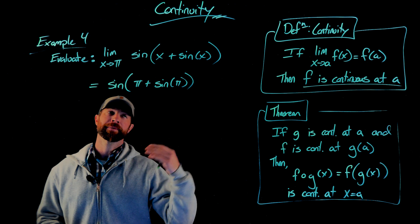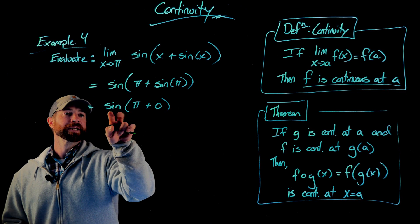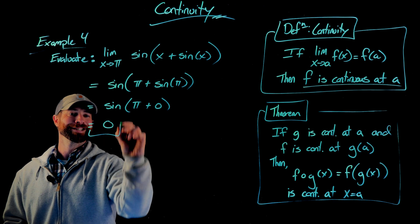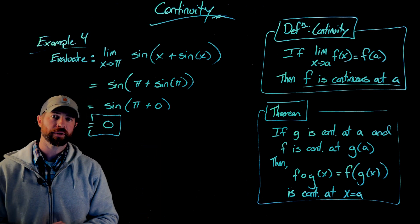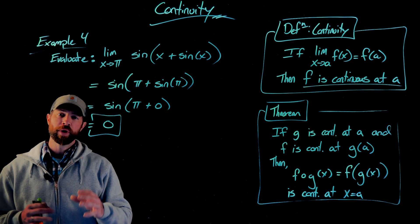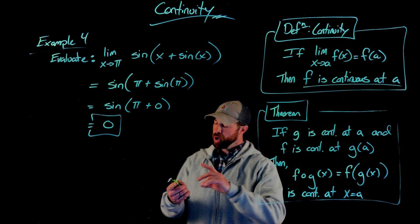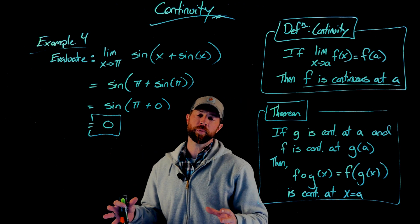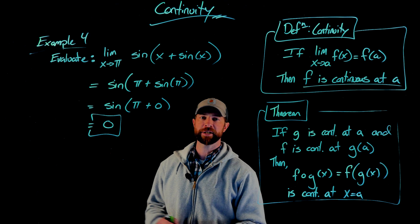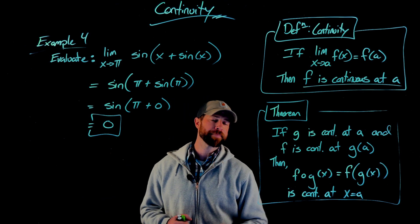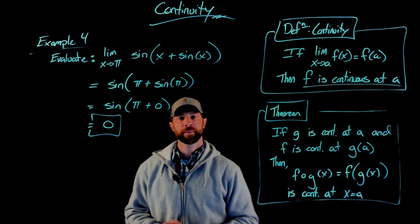Therefore, by continuity, this limit equals sine of pi plus sine of pi. Since sine of pi is zero, this becomes sine of pi plus zero, which is the sine of pi, which is just zero. One of the beauties of this section is that, as long as you follow the theorems and rules, we can evaluate difficult limits quickly using an argument of continuity. To summarize: a function is continuous if its limit at a equals its function value at a; the six major function types are continuous on their domains; adding, subtracting, multiplying, dividing, and composing continuous functions results in a new continuous function — making evaluating limits much easier.